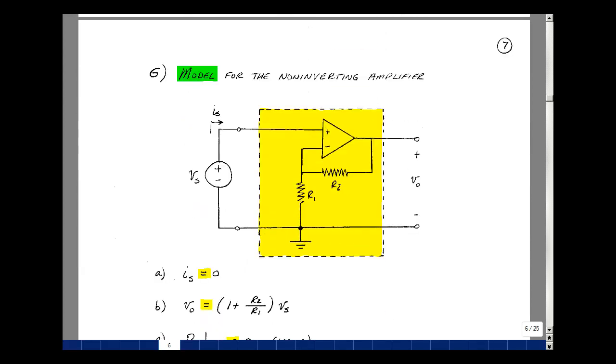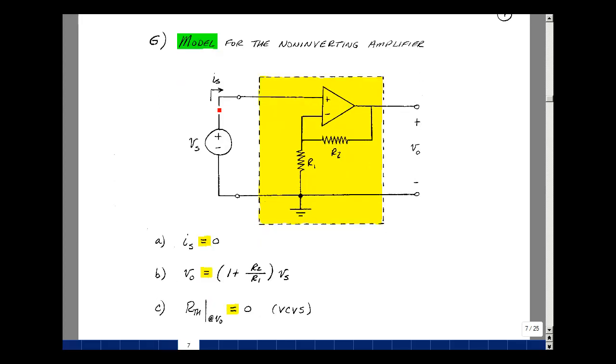Again, our task here is to try to find a model for this circuit because there's a very common building block in audio. Let's find the properties of the voltage and current at the terminals.